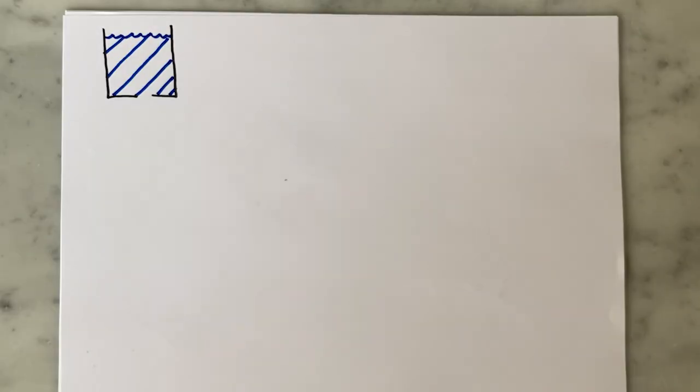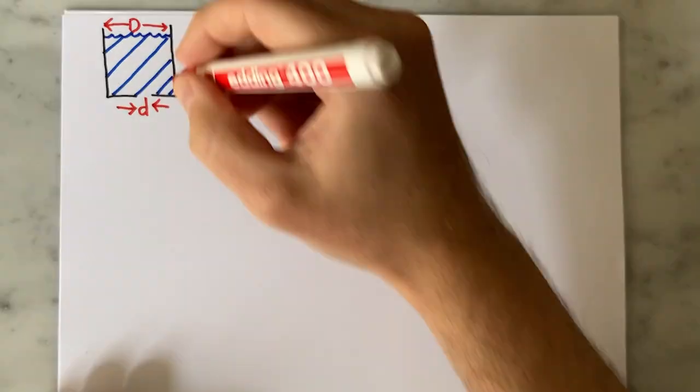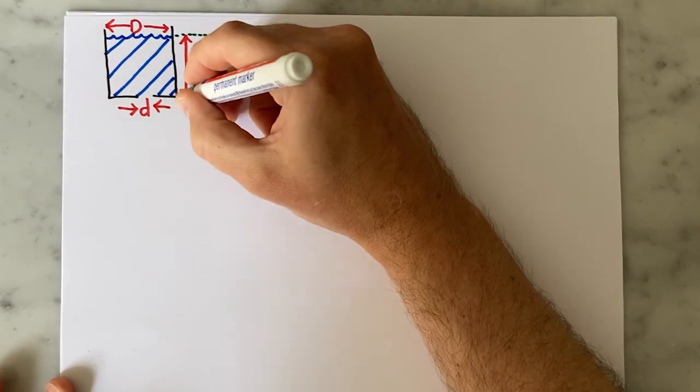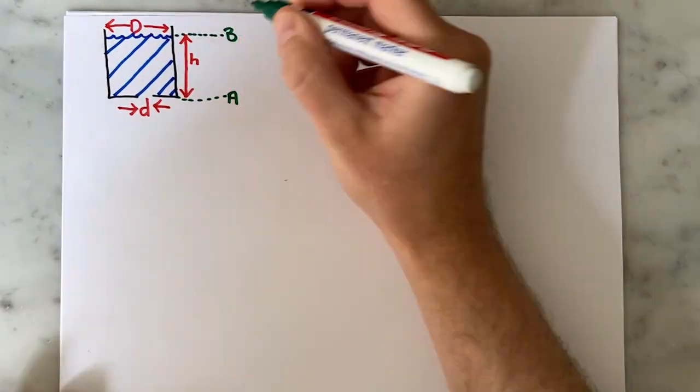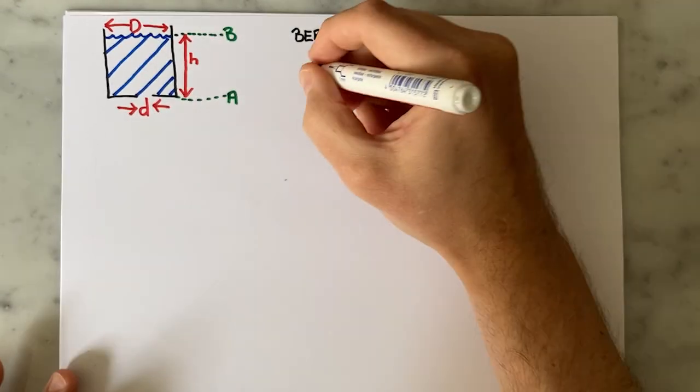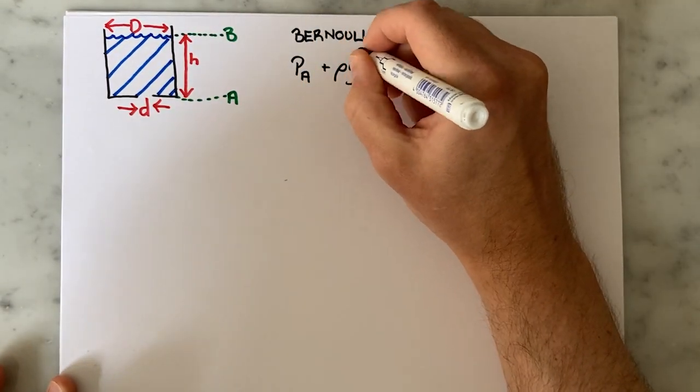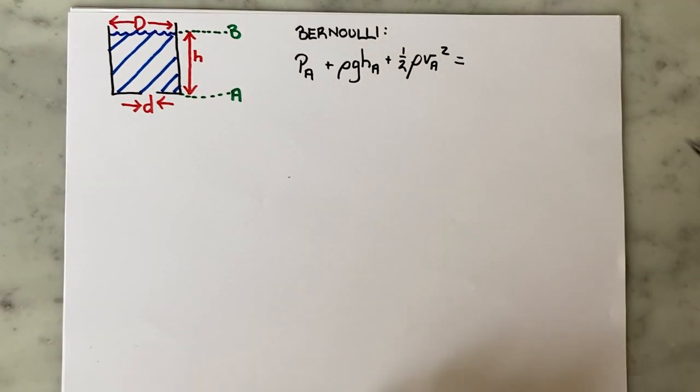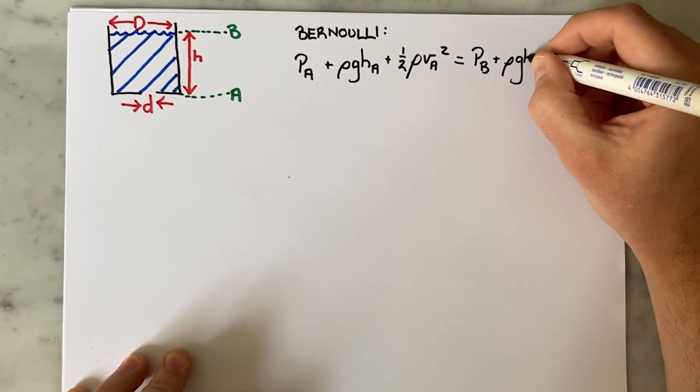We start with the theory. Take a cylindrical tank with diameter capital D and height H. Assume the tank has a circular drain hole with diameter small d in its base. We define two points: A at the base of the tank and B in line with the liquid level. We then apply Bernoulli's equation to these two points. Bernoulli basically states that at any point in this tank, the energy contained by the liquid by virtue of its pressure, velocity, and height is constant.